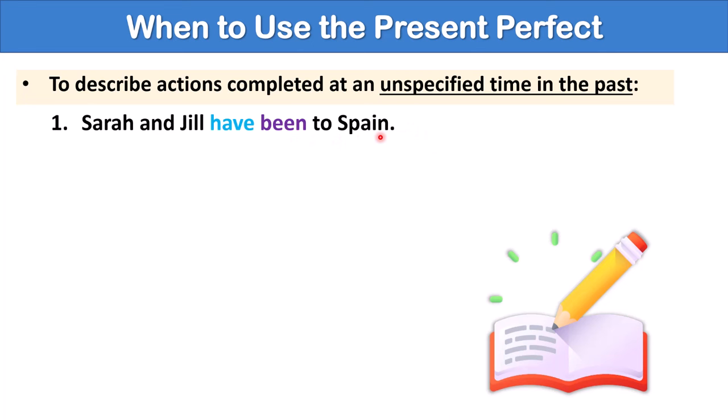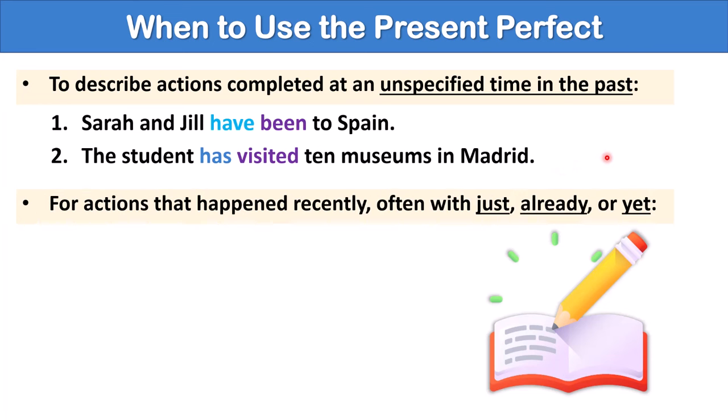This happened in the past, but there is not a specified time. Imagine their trip was in 2020. I would say Sarah and Jill went to Spain in 2020. But because I have not specified a time in the past, I'm going to use the present perfect. Another example. The student has visited 10 museums in Madrid. Again, I've not specified a time in the past, so I can use the present perfect.